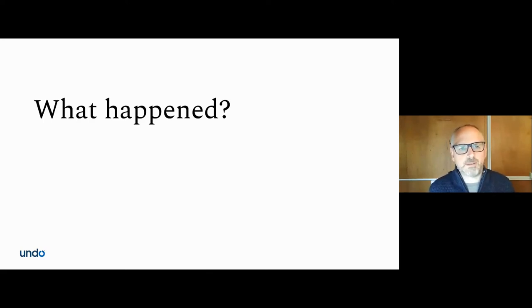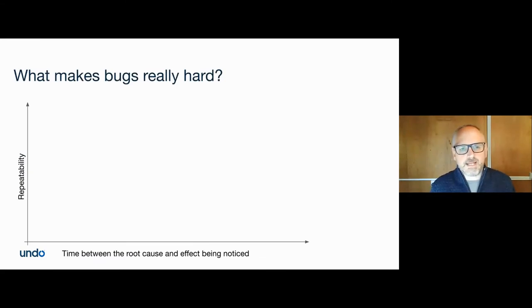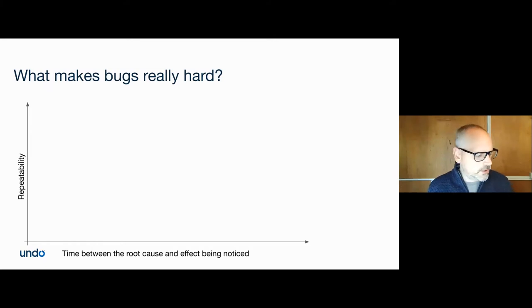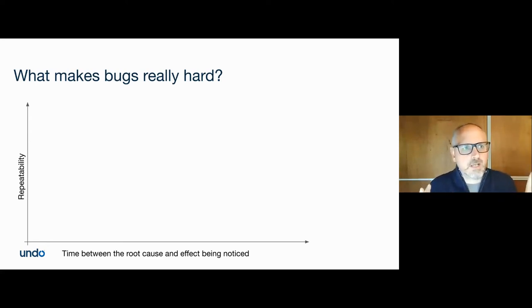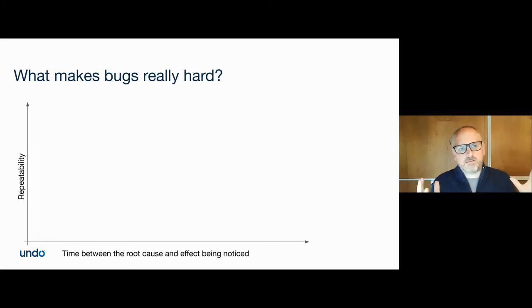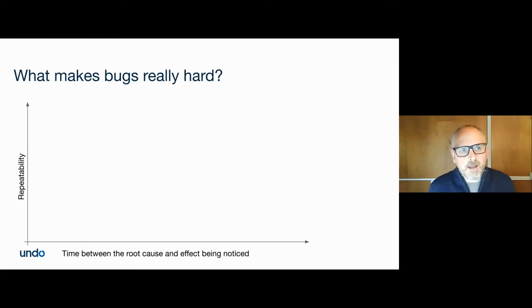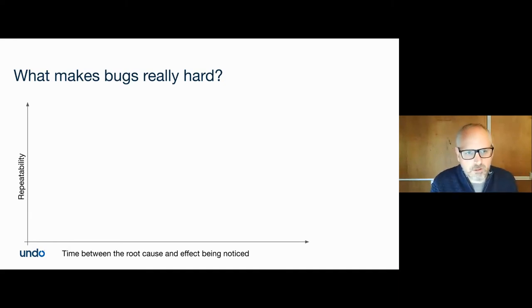Debugging is really the question: what happened? It gets really hard when significant time has passed between the bug and you noticing it, or every time you run it behaves slightly differently. If you're lucky and get a null pointer exception with a backtrace, the point of failure is close to the root cause and you can fix it quickly. That probably covers the majority of bugs by volume — especially those that never make it into source control — but that's where we spend the minority of our time.